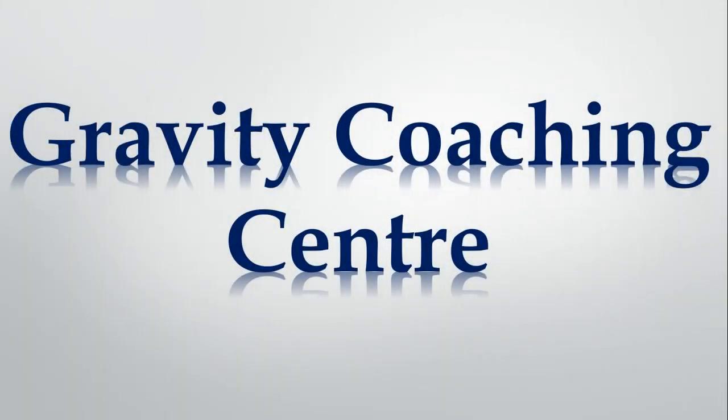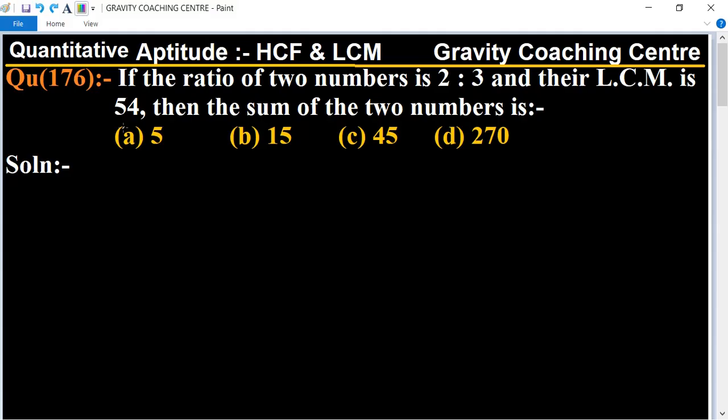Welcome to our channel Gravity Coaching Center, Quantitative Aptitude chapter HCF and LCM, question number 176. If the ratio of two numbers is 2:3 and their LCM is 54, then the sum of the two numbers is: